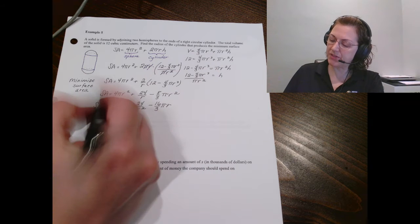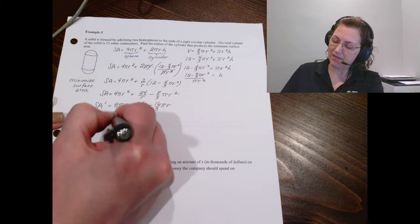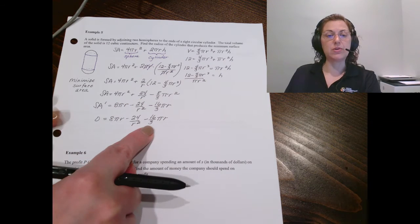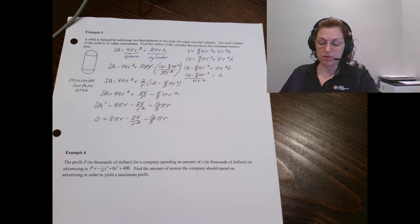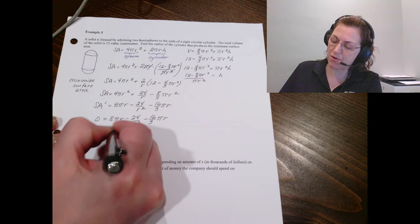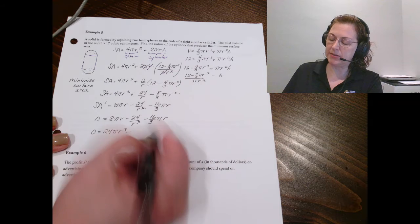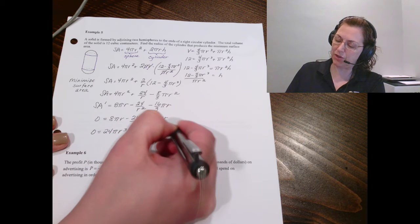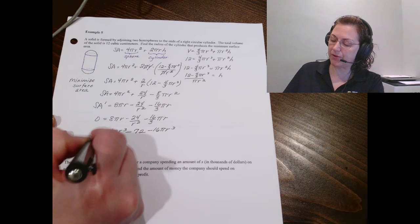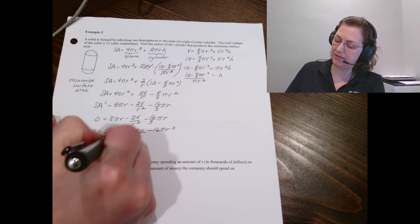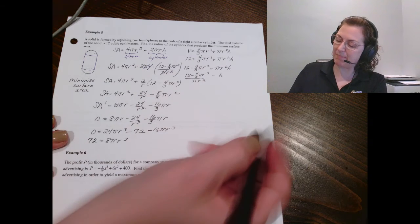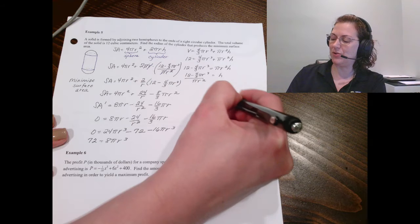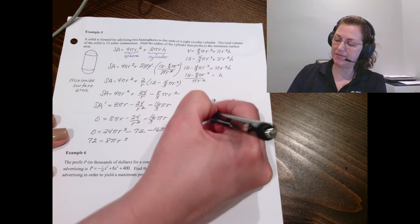And now we're going to set this equal to zero to try to find the minimum. Probably our best bet is to clear that r² from the denominator. I'll also clear the three. So essentially what I'm gonna do is multiply everything by 3r². That gives me 24πr³ - 72 - 16πr³. Looking much better now. Let's move the 72 over. We'll combine these two to get 8πr³. We'll divide by the 8π so that I get 9/π equals r³. And so r would be the cube root of 9/π.